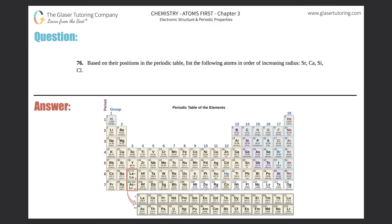Number 76. Based on their positions in the periodic table, list the following atoms in order of increasing radius: Sr, Ca, Si, and Cl.